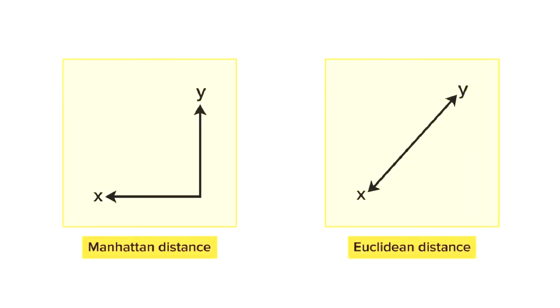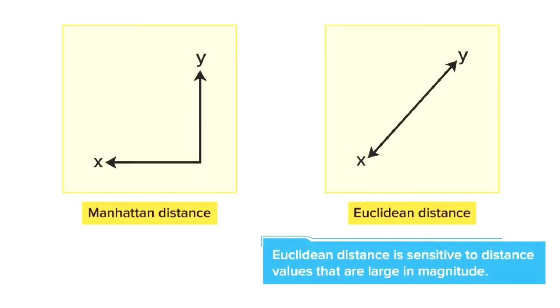Something similar happens in the case of Euclidean and Manhattan distance. Euclidean distance is sensitive to distance values that are large in magnitude as compared to Manhattan distance.